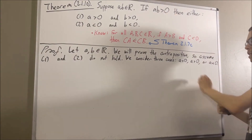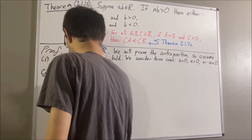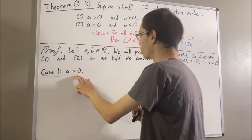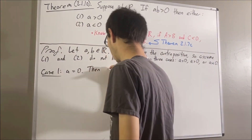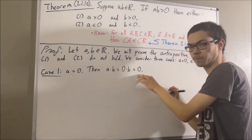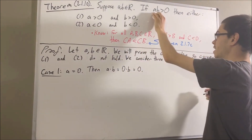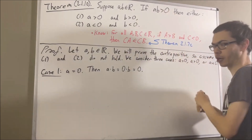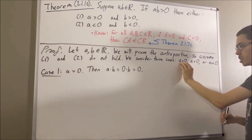Let's start with the first case where A is equal to zero. In the case where A is equal to zero, A times B is equal to zero. So we have proven in this case that AB is not greater than zero, as required. This completes the case where A is equal to zero.